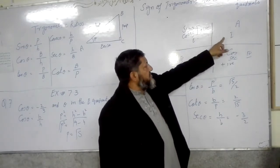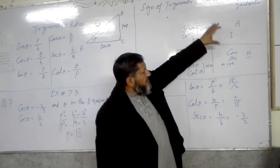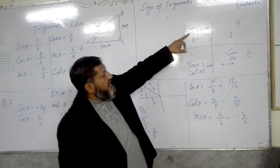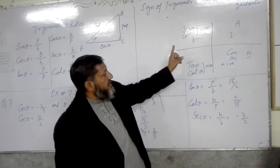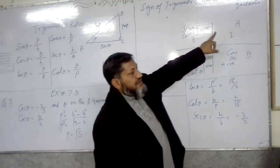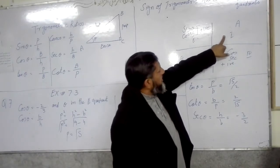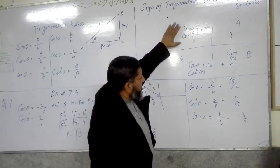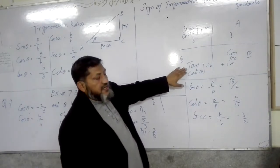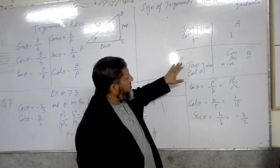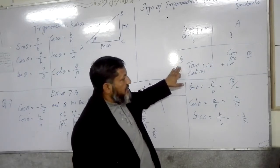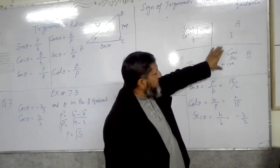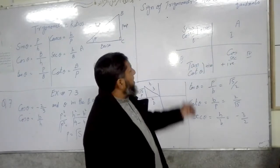Anticlockwise, the quadrants go first, second, third, fourth. Using ACTS anticlockwise: A means all trigonometric functions are positive in the first quadrant. S means sine and its reciprocal cosecant are positive in the second quadrant; the remaining are negative. T means tangent and its reciprocal cotangent are positive in the third quadrant; the remaining are negative.